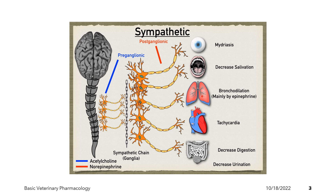These are the effector organs of the sympathetic nervous system. Examples include the eyes, the salivary gland, the lungs — particularly the bronchioles — the heart, and the digestive system, particularly the intestines.